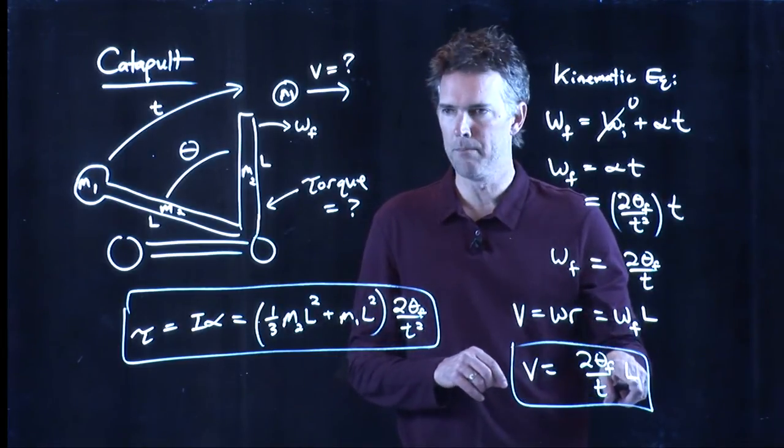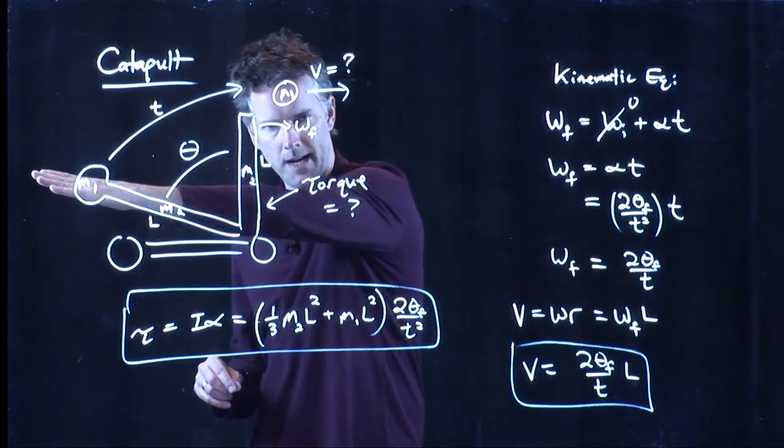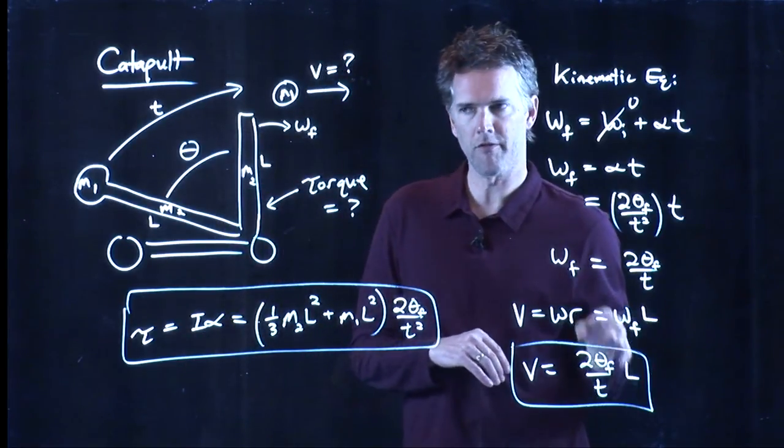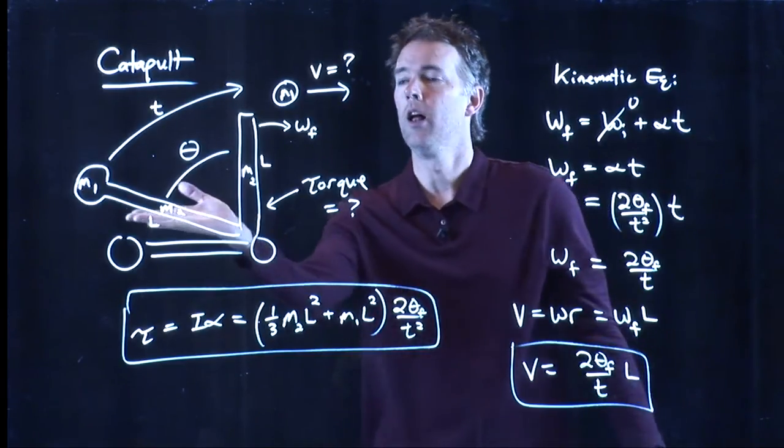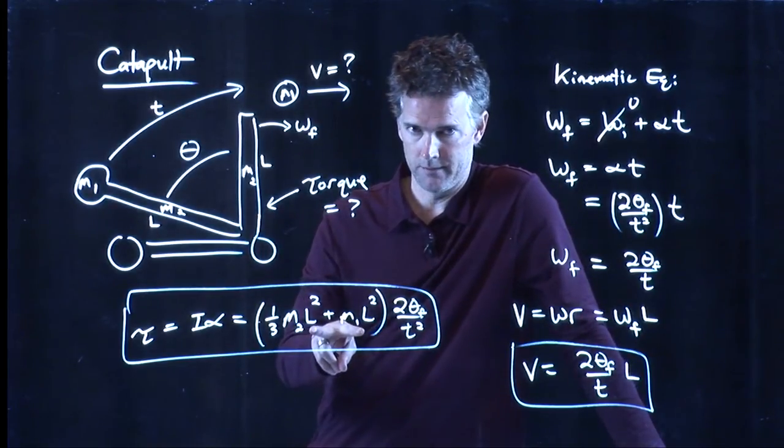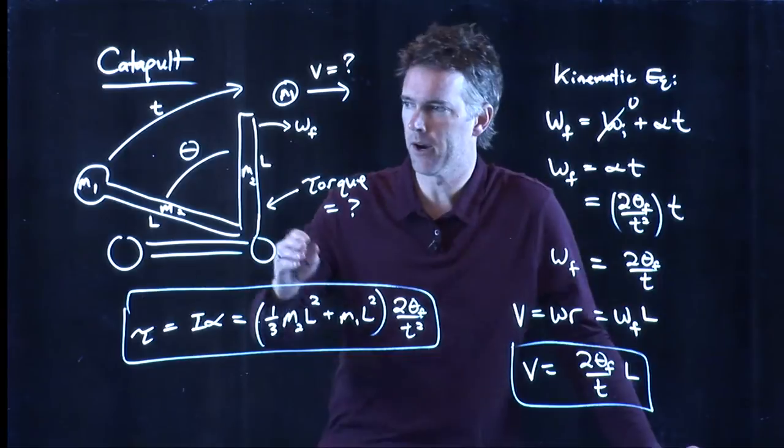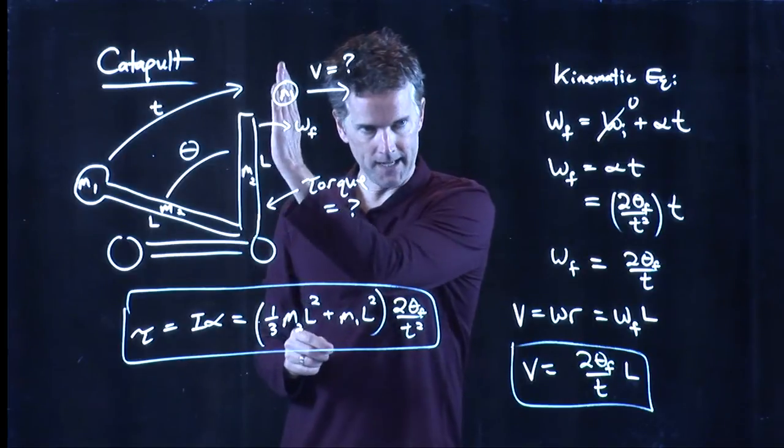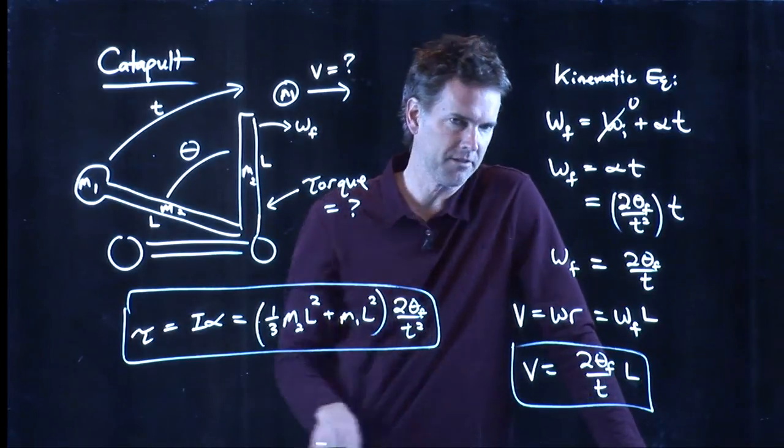It also says that you want a big lever arm L. You want to be able to have a long pole that you put your cannonball at the end of. If it swings up, everything else is the same, then it's going to be going faster at the end. Now, the downside to having a very long lever arm is it requires a lot more torque. Here's the torque L squared right here. So the bigger lever arm you use, the harder it is to rotate it at that same angular acceleration. But if you can, it will be going faster at the end.